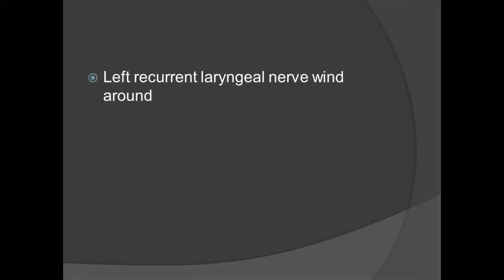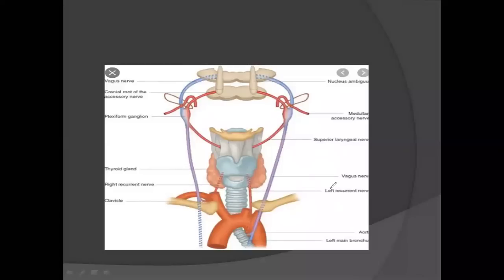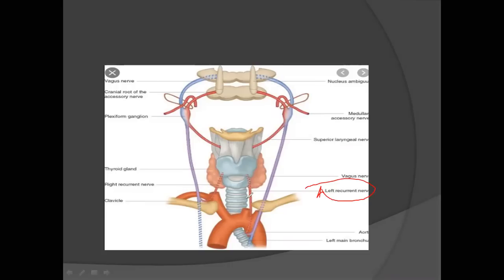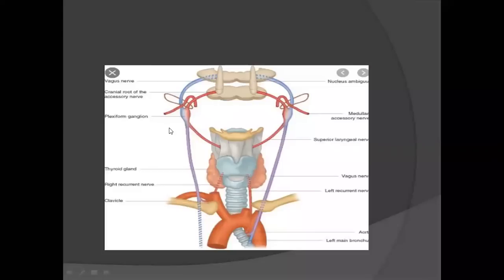Next MCQ was: the left recurrent laryngeal nerve winds around what? The answer is the ductus arteriosus. You can see this in your book — the recurrent laryngeal nerve winds around the ductus arteriosus on the left side. The right recurrent laryngeal nerve is slightly different — it winds around the subclavian artery. So both are different. They could also ask about the right next year, so that was another possibility.